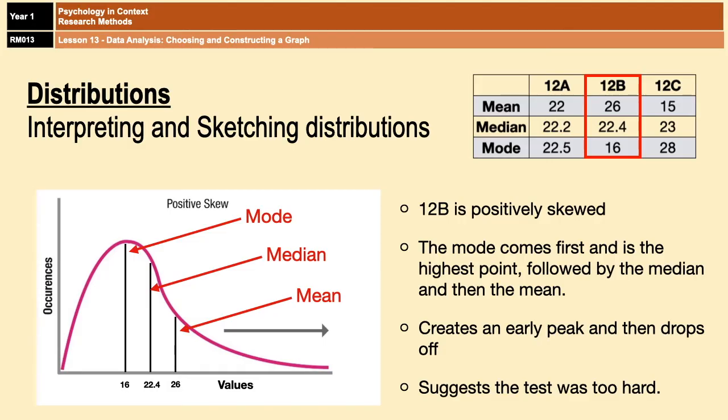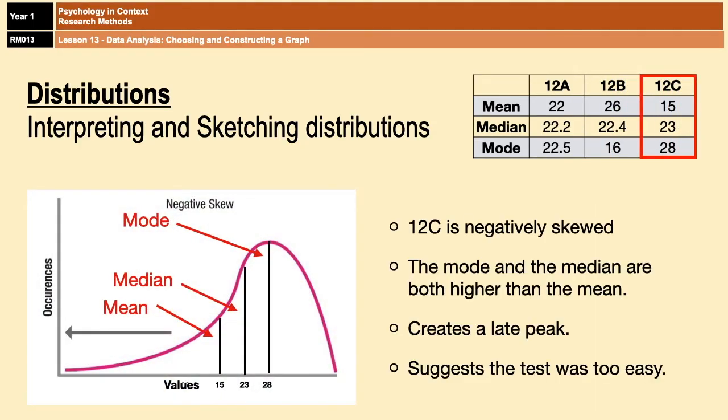And that tells us that actually the exam needs to be made a little bit easier if we were going to normalize that distribution, because too many people found it hard. And then you have 12C, whose results are different again because their distribution is negatively skewed. The mode and the median are both higher than the mean. The mode is still the highest point but it's the furthest to the right, creating a long tail of anomalous results before getting to a late peak. So that would suggest that the test was too easy for 12C, and that a lot of people got high marks, with just a few students getting low marks, which is pulling the mean to the left, as the mean is affected by extreme values.